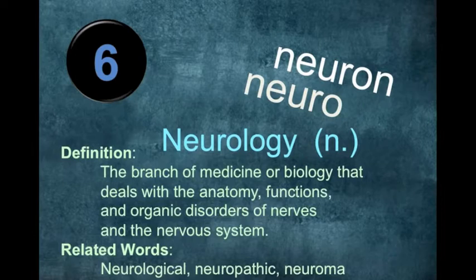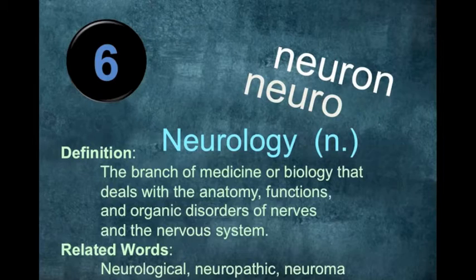The sixth root is neuro. Neuron means nerve. Neurology is the study of nerves. Neuroma is a related word meaning a serious disease of the nerve. Another word is neuropathic, referring to a person who has mental problems due to disorganized nerves.